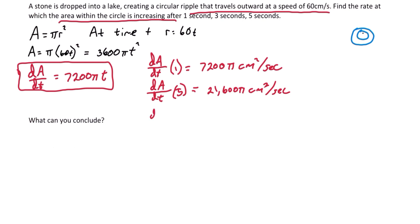And the derivative with respect to time at 5 seconds, again, just plugging in 5, we get 36,000 centimeters squared per second.